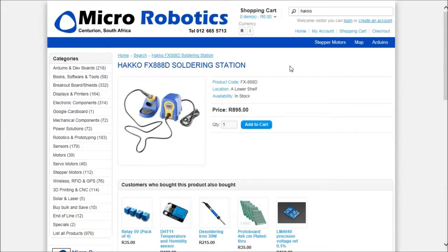I eventually found this website, MicroRobotics. Now, MicroRobotics is in South Africa, they're in the Johannesburg region, they ship worldwide. And these guys currently have this thing listed for 895 South African rands. Now, this is equivalent to the US price.